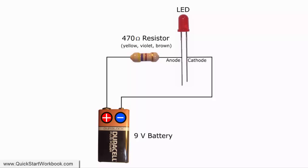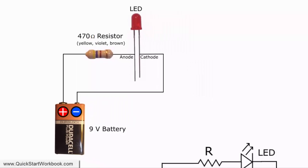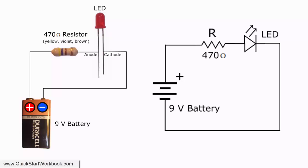It doesn't matter which way around the resistor goes in the circuit, it is a non-polarised component. But the LED on the other hand has to be inserted with the long terminal, the anode, on the positive side of the circuit.